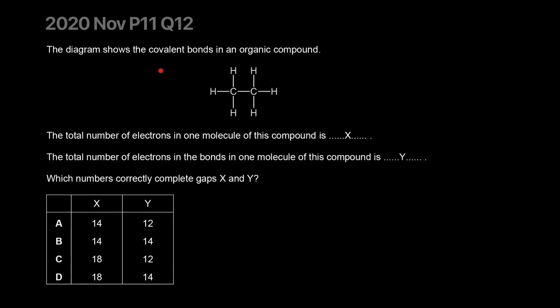All right, the diagram shows the covalent bonds in an organic compound, ethane. The total number of electrons in one molecule of this compound is, the total number of electrons are going to be equal to the proton number, right? So carbon has six protons and hydrogen has one proton.